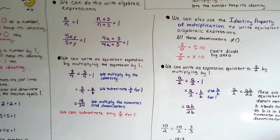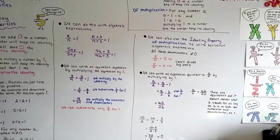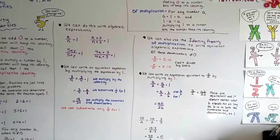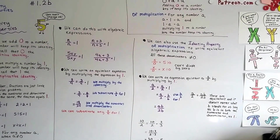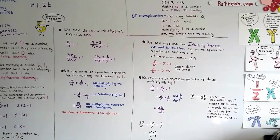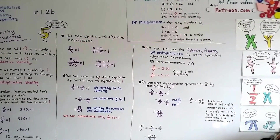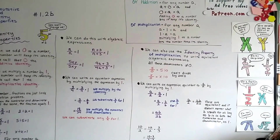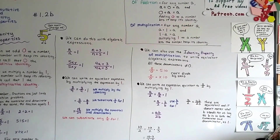So that's the identity properties of addition and multiplication. I've got a link in the description if you want to see the video from Grade 5 Math that talks about all the properties, including associative and distributive. We covered commutative in the last video, and we're going to talk about simplifying expressions in the next video.